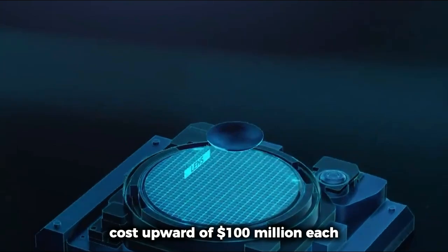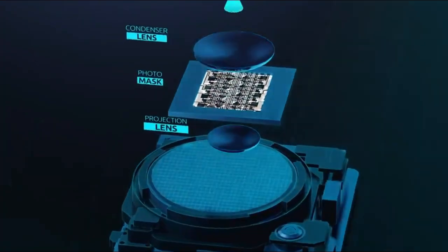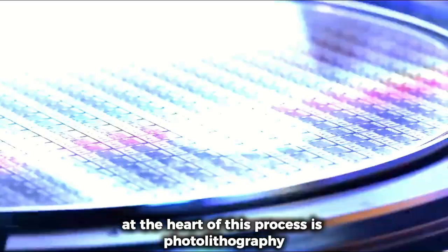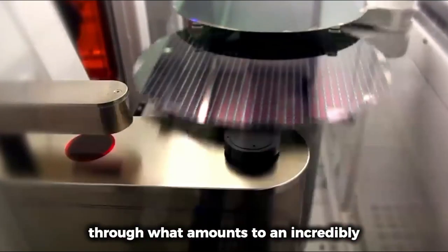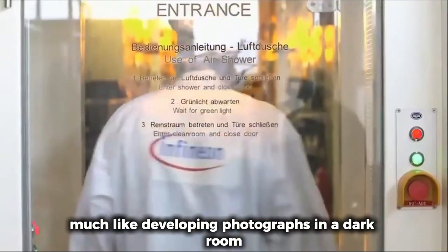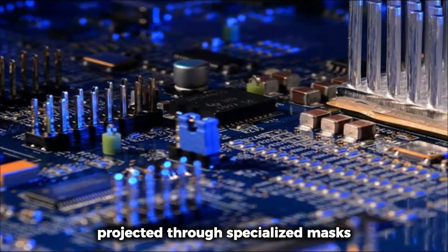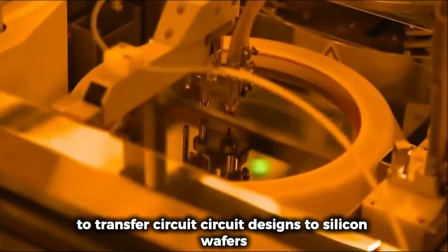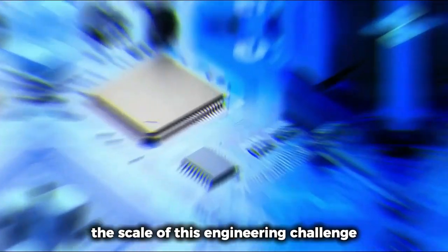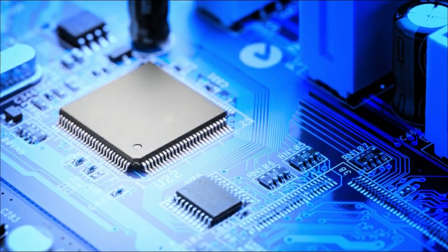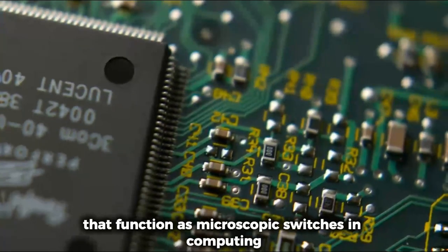Only within these pristine walls can the journey from raw silicon to sophisticated memory chip truly begin. Inside this meticulously clean environment, engineers face their greatest technical hurdle: creating billions of identical structures so small they're invisible to all but the most powerful microscopes. The machines that accomplish this feat cost upward of $100 million each, a price that reflects their almost unbelievable precision. At the heart of this process is photolithography, a technique that transforms raw silicon into functioning circuits through what amounts to an incredibly sophisticated printing process. Much like developing photographs in a darkroom, photolithography uses ultraviolet light projected through specialized masks to transfer circuit designs onto silicon wafers.